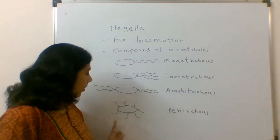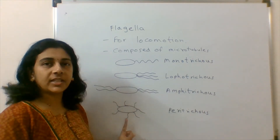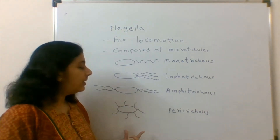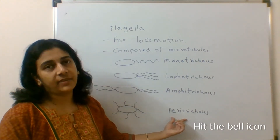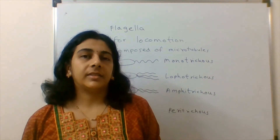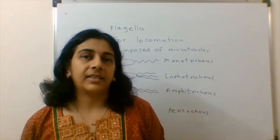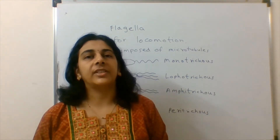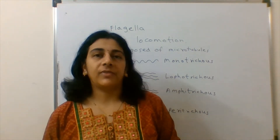Peritrichous means all over the cell — there are a number of flagella present all over the bacterial cell, and we call it peritrichous flagella. In this way, there are four types of flagella that can be present in a bacterial cell. Different bacterial cells will have different types of flagella.